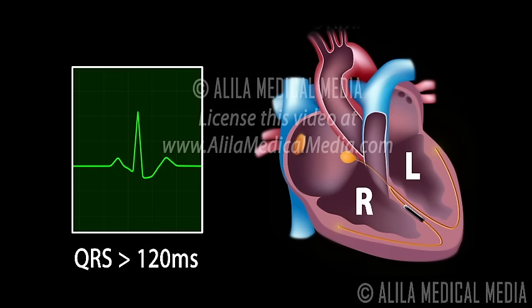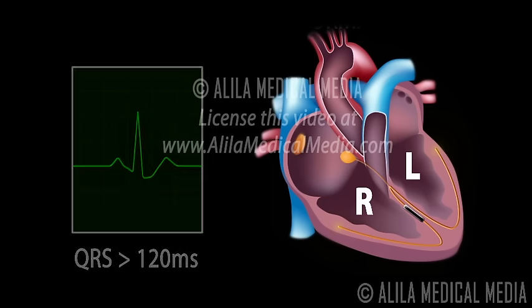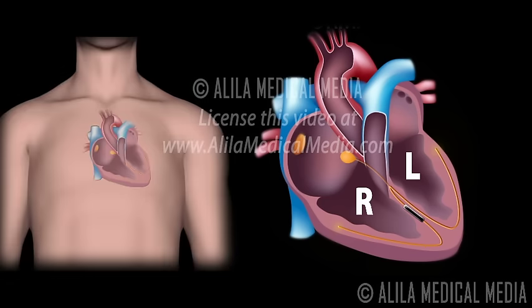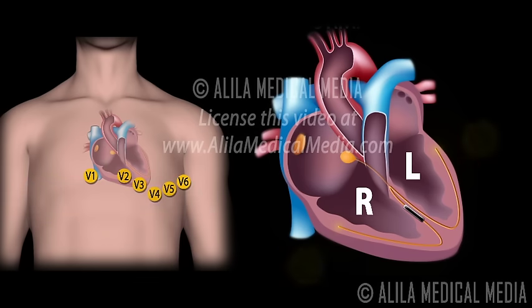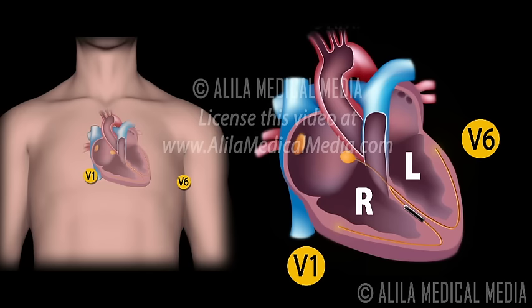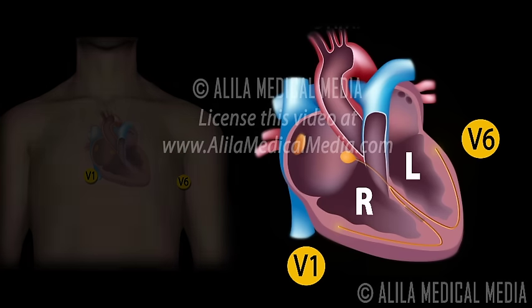Left and right bundle branch blocks are diagnosed and differentiated by looking at ECG recordings obtained from the chest leads, which register signal movements in a horizontal plane. Of these, the most useful are leads V1 and V6, as they are best located to detect impulses moving between the left and right ventricles.